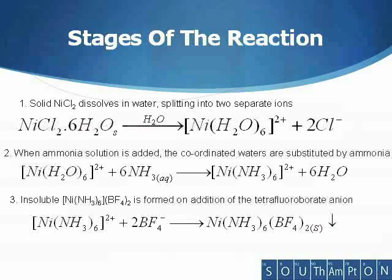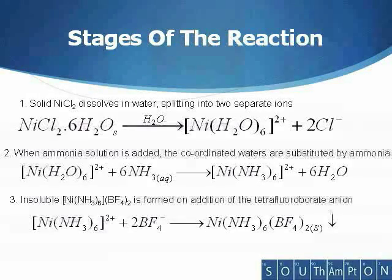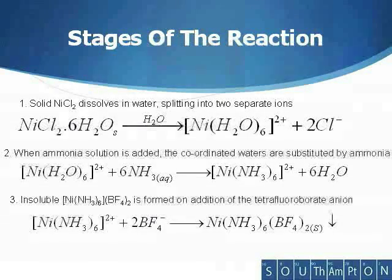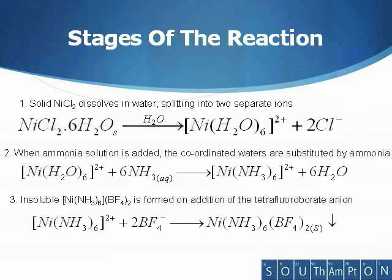The steps of the reaction can be viewed as occurring as follows. Nickel chloride is dissolved in water. The nickel behaves as a Lewis acid and accepts a pair of electrons from the Lewis base, with the oxygen atom donating one of its lone pairs of electrons to the nickel, forming a coordination compound. With the addition of ammonia, ligand substitution of the coordinated water occurs, producing nickel hexaamine chloride. Finally, addition of sodium tetrafluoroborate to the nickel hexaamine chloride solution immediately produces hexaamine nickel tetrafluoroborate as a crystalline precipitate.